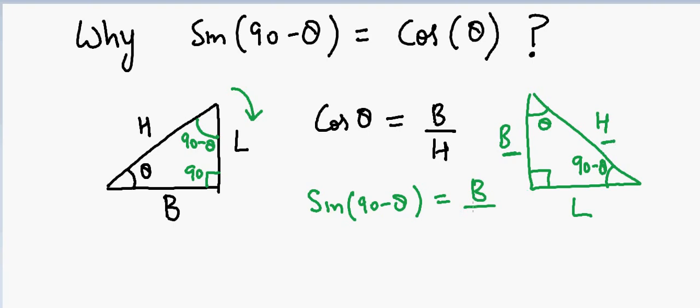Yes, these two are the same. That means cos of theta is equal to sine of 90 minus theta. Oh, that's cool. I'll see you later, guys.